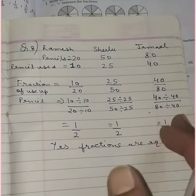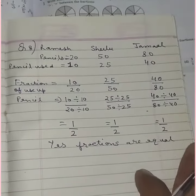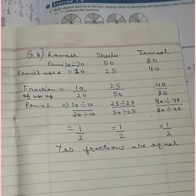So, 1 by 2, 1 by 2, 1 by 2. In simplified form, they're the same. This means the fractions are equivalent, equal is equal.